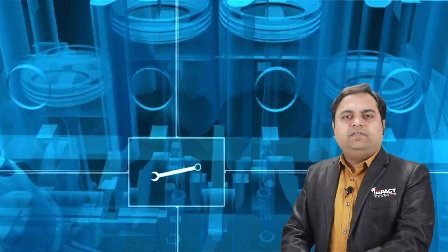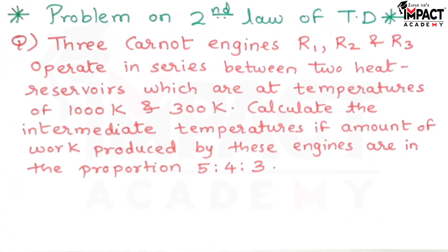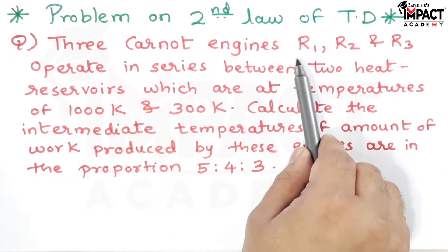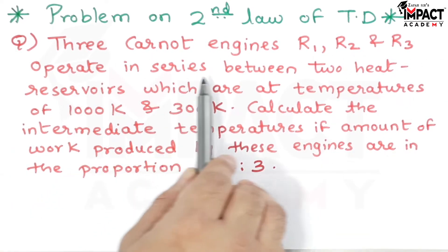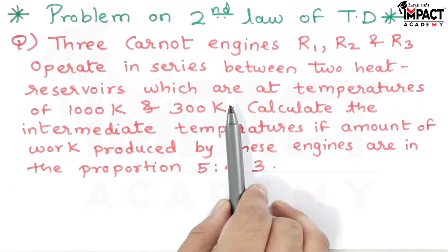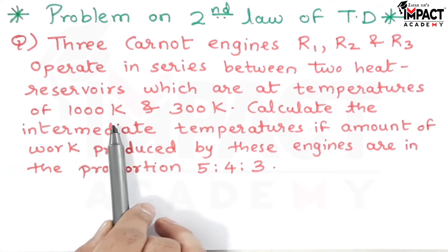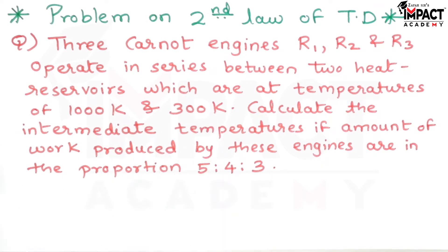In this video we'll see a problem on the second law of thermodynamics. Three Carnot engines denoted by R1, R2, and R3 operate in series between two heat reservoirs at temperatures of 1000 Kelvin and 300 Kelvin.